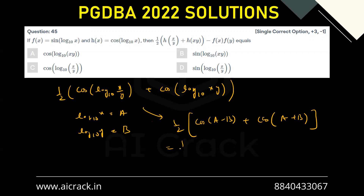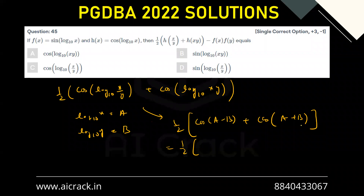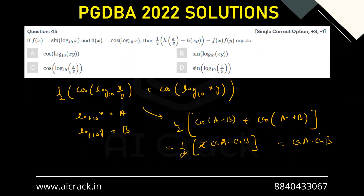So we have (1/2)[cos(a − b) + cos(a + b)]. Expanding: cos(a − b) = cos(a)cos(b) + sin(a)sin(b), and cos(a + b) = cos(a)cos(b) − sin(a)sin(b). The sin(a)sin(b) terms cancel, leaving (1/2) × 2·cos(a)cos(b) = cos(a)cos(b).